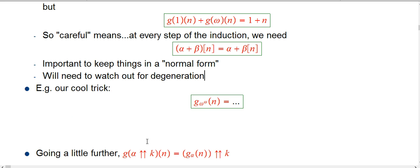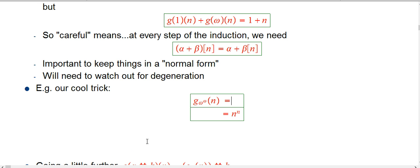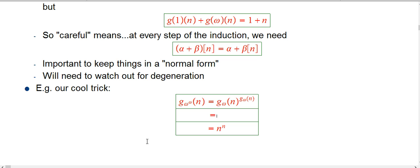For example, what about our cool trick? G omega to the omega of n. The claim was that you put in n for both the omegas and you just get n to the n. Why is that true? It's going to be true because that's G sub omega of n to the G sub omega of n, using that third rule. I didn't prove that one, but this proof is very very similar for both multiplication and exponentiation to the proof I showed you for addition. And you do have to be careful. This is really not one of those cases where it gets weird and this is not in a normal form, but this is absolutely in a normal form. This is in what's called Cantor normal form. We know what G omega of n is, it's n.